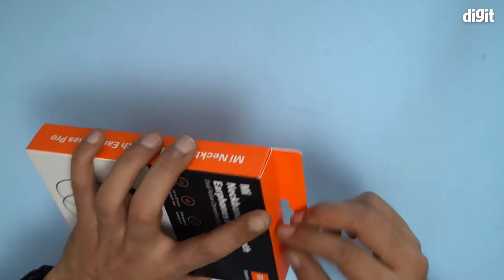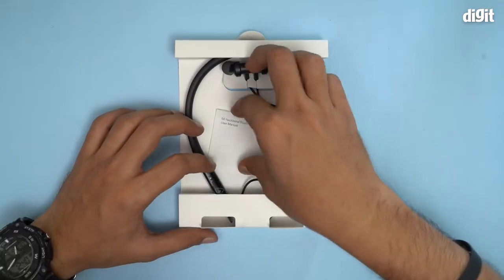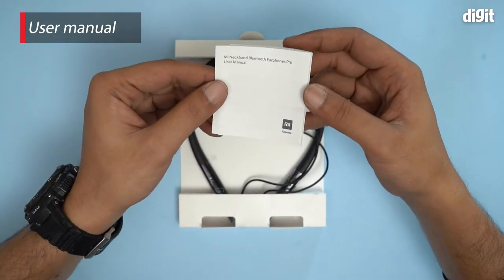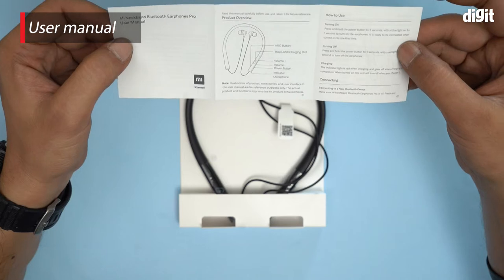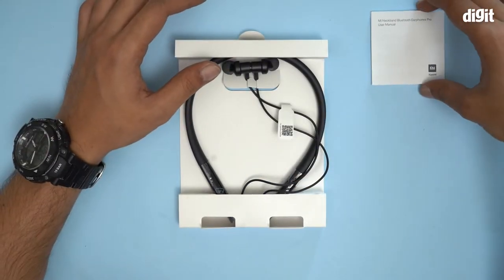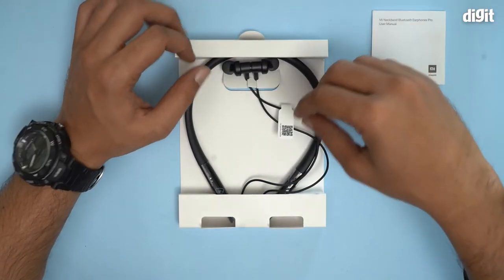Let's take a look inside and see what this device actually looks like. This is the user manual for the device, Mi Neckband Bluetooth Earphones Pro user manual. All the instructions that you need to set up this device you will find in this particular document.